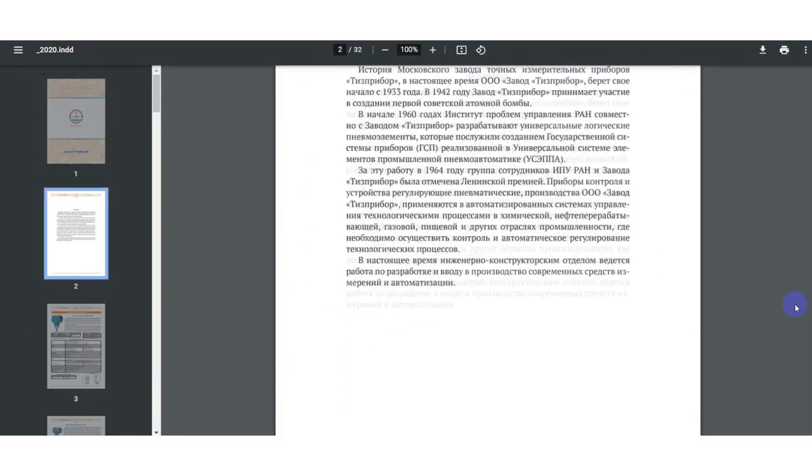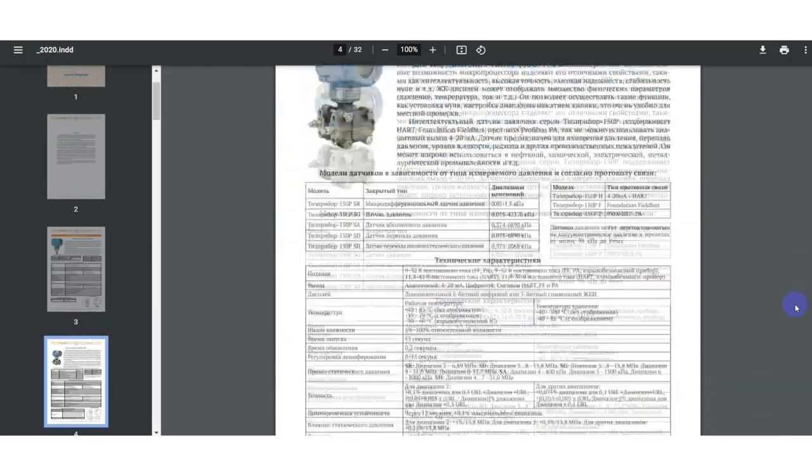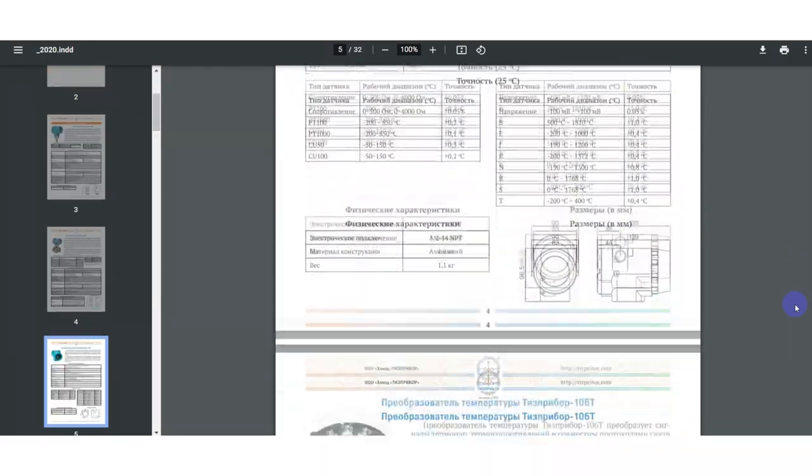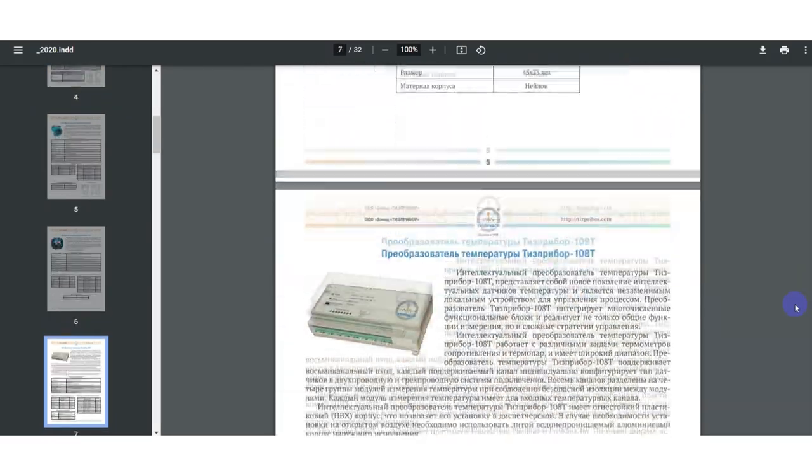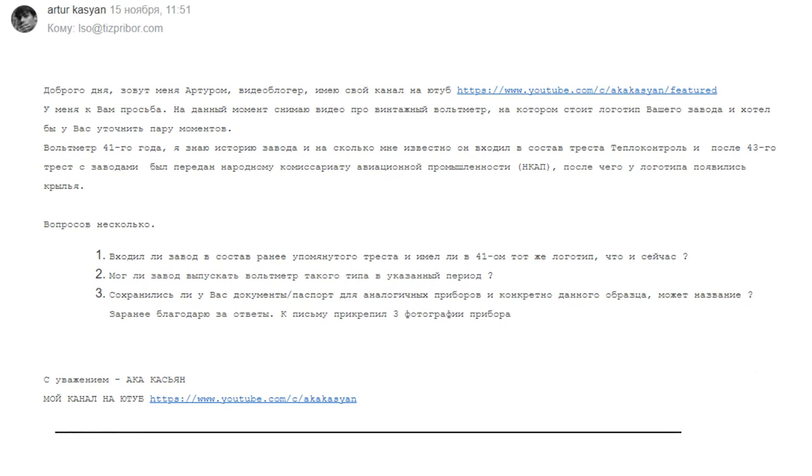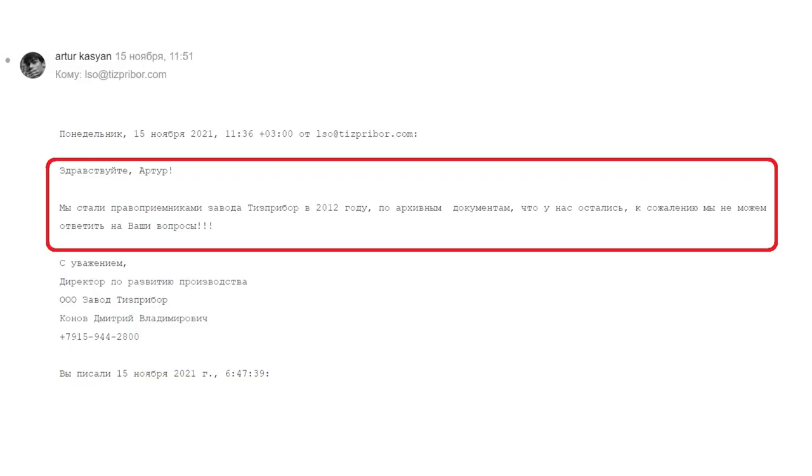As far as I understand, judging by their website and product catalog, at the moment they produce all sorts of hydropneumatic things. Of course, I wrote to them asking them to provide some information about these devices, to confirm or deny my information about the history of the factory. The answer was received very quickly. The current owners of the factory have been the legal successors since 2012, and alas, they don't have archival documents for this voltmeter. It's a pity.